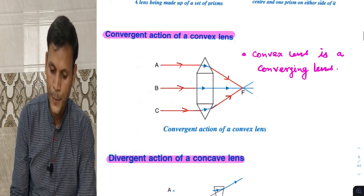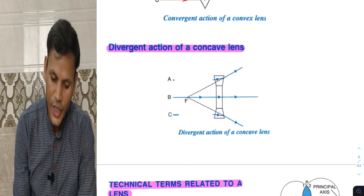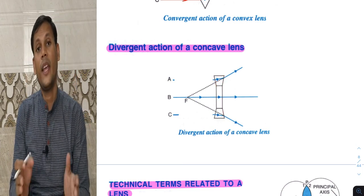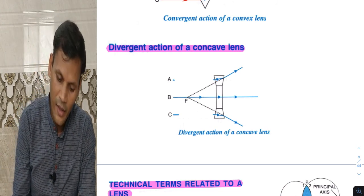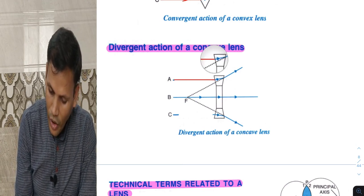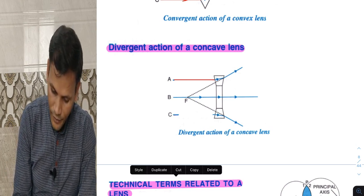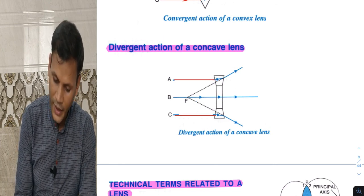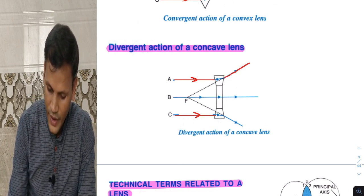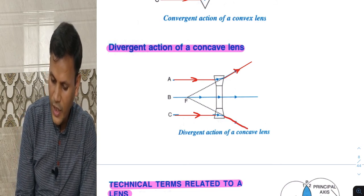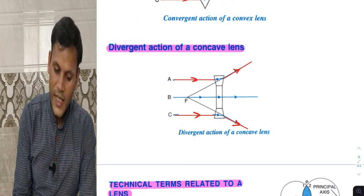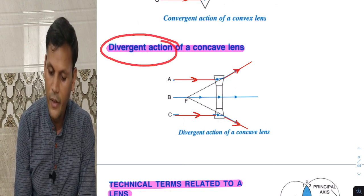Next: divergent action of a concave lens. In a concave lens, divergence takes place. A beam of light incident on the surface of this lens diverges after refraction. Here also, divergence takes place. This is the divergent action of a concave lens.